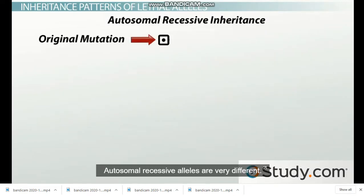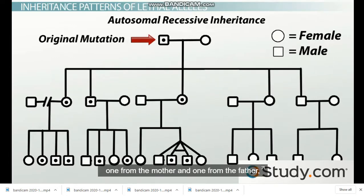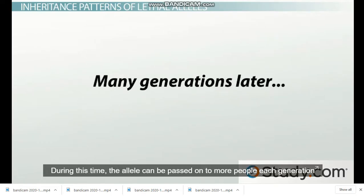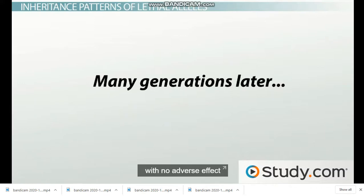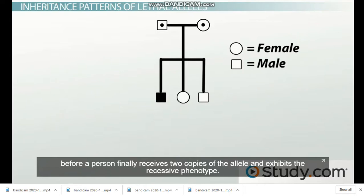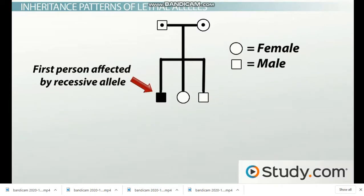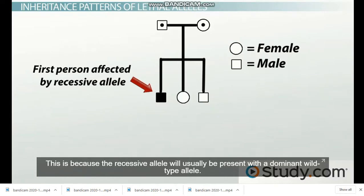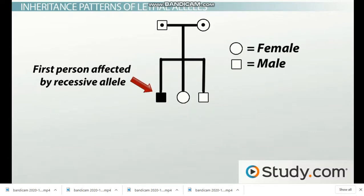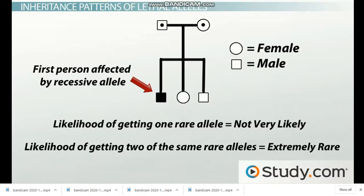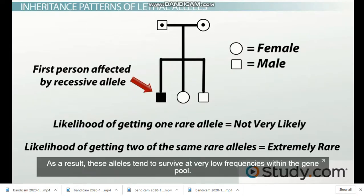Autosomal recessive alleles are very different. Because it takes two copies — one from the mother and one from the father — a new autosomal recessive allele can survive by chance for many generations. During this time, the allele can be passed on to more people each generation with no adverse effect before a person finally receives two copies and exhibits the recessive phenotype. Even if the consequences are as severe as prenatal death, the allele will only rarely result in harm, because it will usually be present with a dominant wild-type allele. Therefore, even a lethal recessive allele can usually survive as a minor allele in the gene pool, tending to persist at very low frequencies.